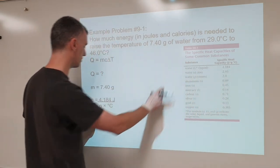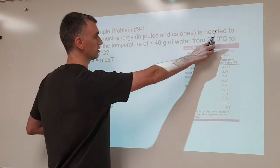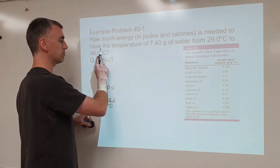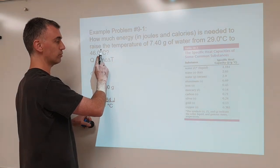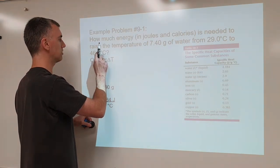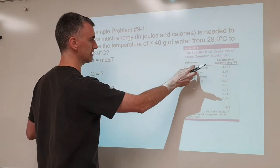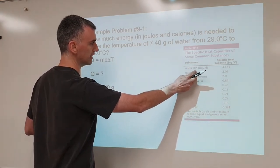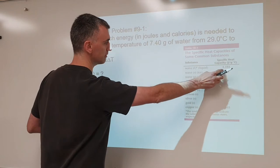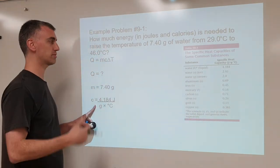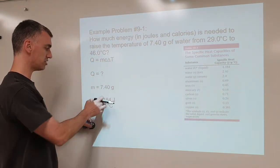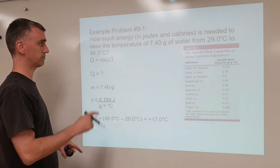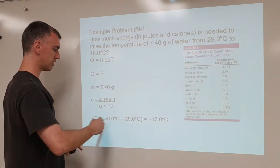At this temperature range, we expect you to know that water is a liquid, because it boils at 100 degrees, so it's a vapor above 100 or frozen below zero. So at this temperature range, water is liquid. Notice that different types of water like ice and steam have different specific heat capacities, so pick the one that's correct for your temperature range. Then we'll talk about delta T.